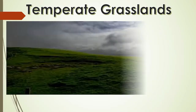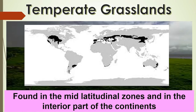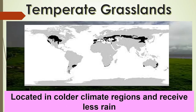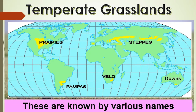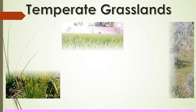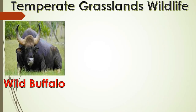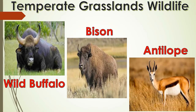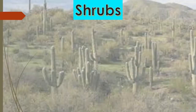Temperate grasslands are found in the mid-latitudinal zones and in the interior parts of the continents. They are located in colder climate regions and receive less rainfall. Temperate grasslands are known by different names in different regions: pampas in Argentina, prairie in North America, veld in South Africa, steppe in central Asia and downs in Australia. Grasses are short and nutritious here. Wild buffaloes, bisons and antelopes are some of the common animals found here.